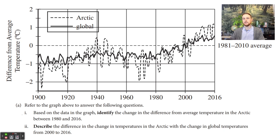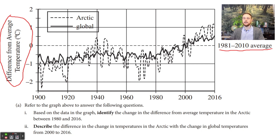Here we have a graph showing the change in temperature in both the Arctic and globally from 1900 to 2016. The first thing to notice is the y-axis — this is the temperature difference from average, not just temperature in degrees Celsius. We're talking about one degree below the 1981 to 2010 average, which is a really important distinction. Also check the key: the dotted line represents the Arctic, and the bold line represents global temperatures. So we're comparing how the Arctic and global average differ from that background 1981 to 2010 average.